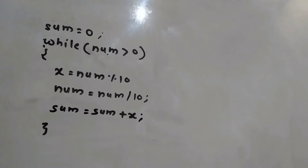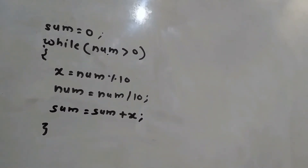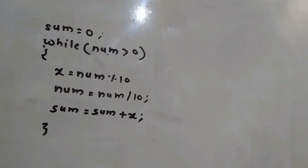I have written some code here. This code is calculating the sum of digits. I will first dry run this code which calculates the sum of digits, and then I will make a small change to get the sum of the cube of each digit.